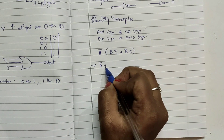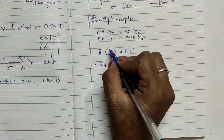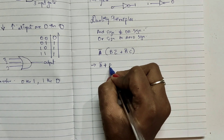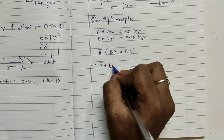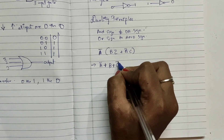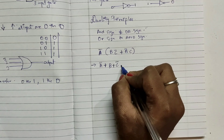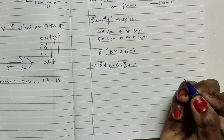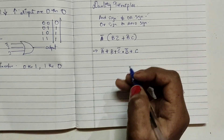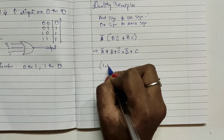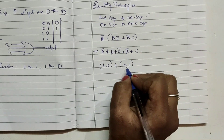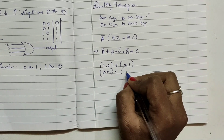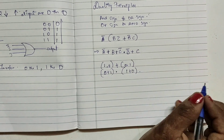Applying duality to an example expression: wherever there is a dot we change it to plus, and wherever there is a plus we change it to dot, while keeping complements the same. For instance, 1·0 + 0·1 becomes 0+1 · 1+0 under the duality principle. These are the duality relations for logic gates.